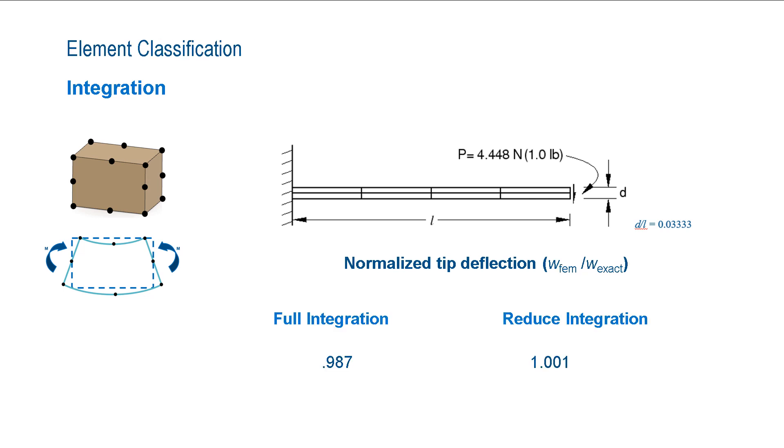The two types of integration are full and reduced. Full integration under-predicts the tip displacement by a little over 1%, while reduced integration over-predicts the tip displacement by 0.1%.